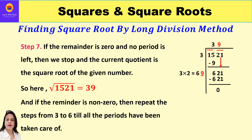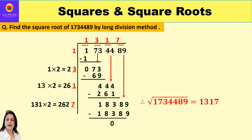Step 7 says: if the remainder is 0 and no period is left, we stop. There are no more periods to bring down and the remainder is 0, so the current quotient 39 is the square root of 1521. If the remainder is non-zero, repeat steps 3 to 6 until all periods have been taken care of.